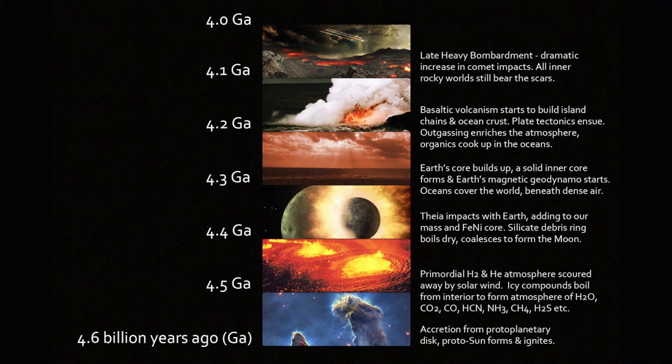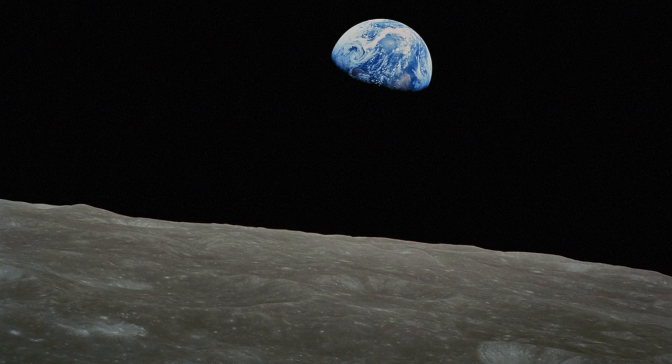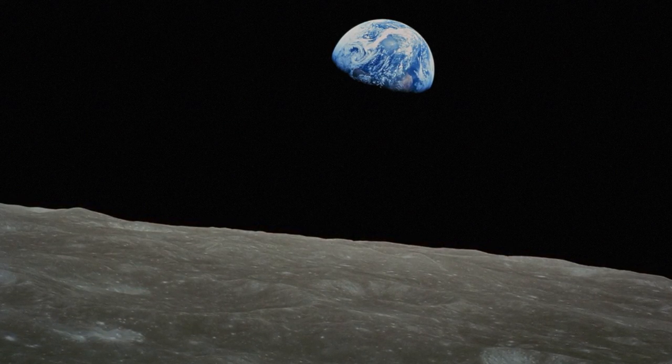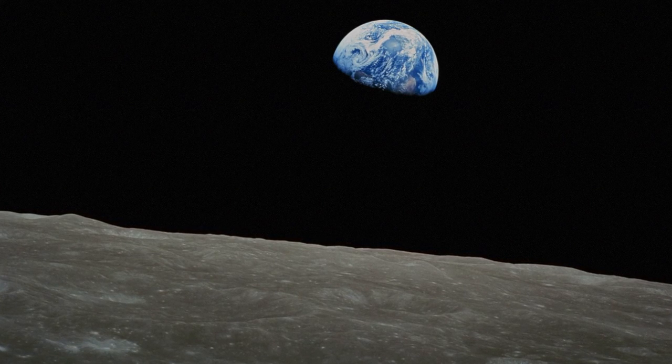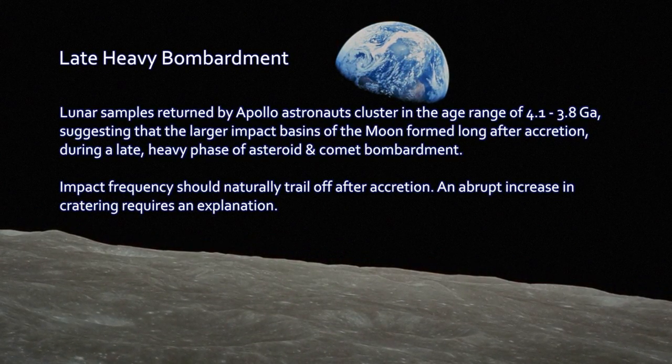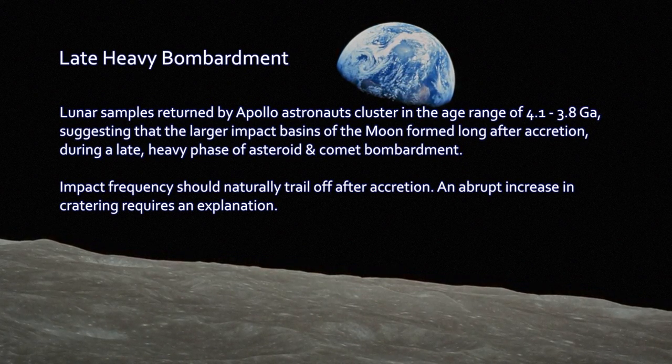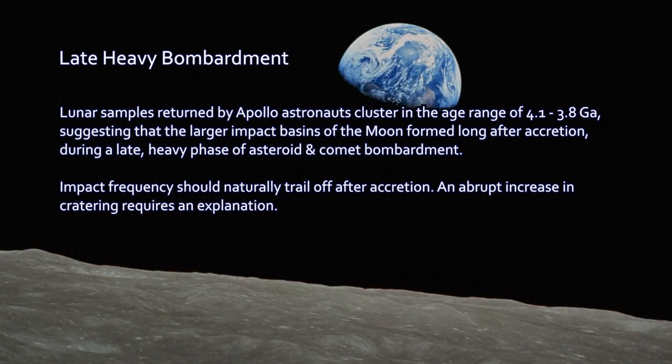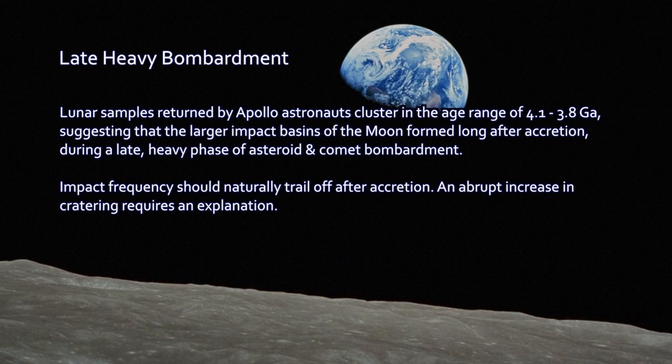It's called the Late Heavy Bombardment. It was a dramatic increase in the frequency of comet and asteroid impacts, massive impacts, of whichever composition, into the Earth. And this continued until about 3.9, maybe 3.8 billion years ago, and sort of trailed away. That needs an explanation. So how do we know that that even happened at all? How do we know that the Late Heavy Bombardment occurred? Any cratering from that time on Earth would have been long since gone to erosion. So we're not looking at our planet for the evidence for that. We're looking at the Moon.